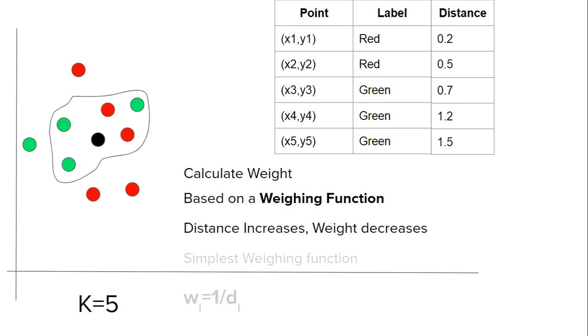One of the simplest weighing functions is the inverse function. The formula is very simple: to calculate weight, you find the inverse of the distance between the query point and the training point (w = 1/d). Using this formula, I have calculated the weight for all these points. For a distance of 0.2 the weight is 5, for 0.5 the weight is 2, and so on.